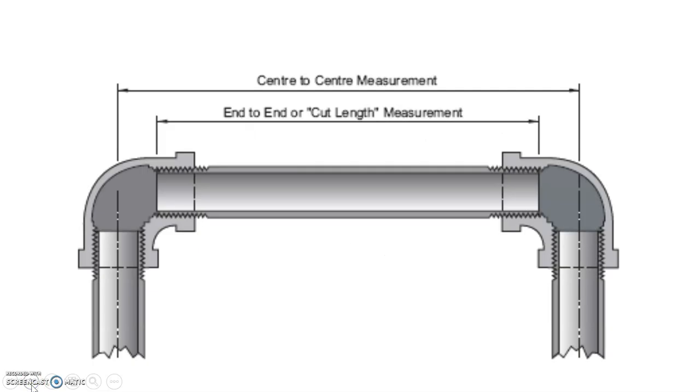In this diagram here we have a piece of pipe inserted, in this case it looks like it's threaded, into two 90 degree fittings on either side. And what we're trying to find out for this is the actual end-to-end, so the end of the pipe over to the end of the pipe, the actual piece of pipe that we have to cut.